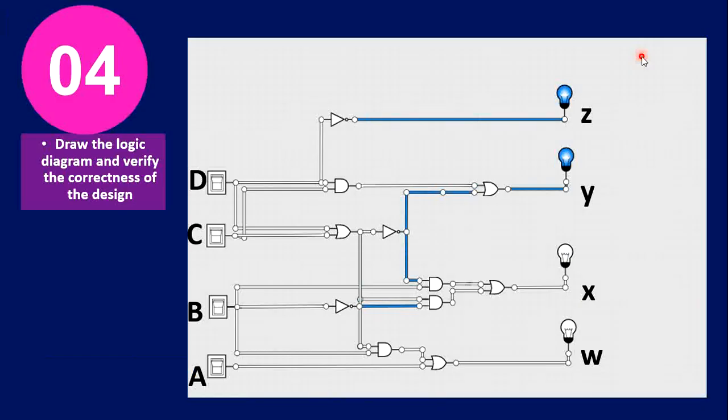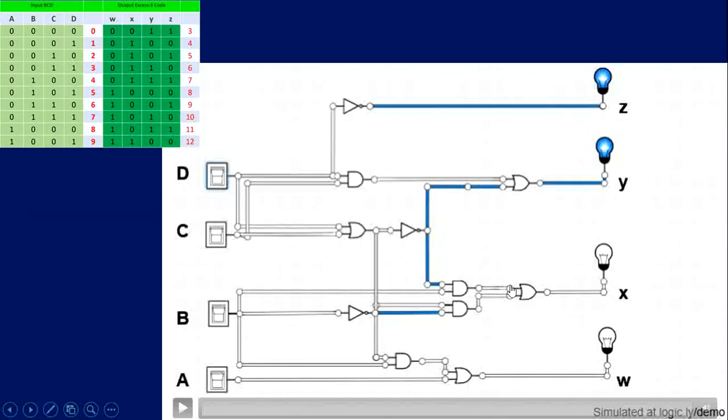Number four: draw the logic diagram. I used an online logic simulation—I used logic.ly/demo. This is just a demo. Let's try to simulate and verify the correctness of the design. Let's verify if this logic circuit produces the correct result by referring to the truth table for every input. As you can see, A, B, C, D are our inputs; W, X, Y, Z are outputs. A is the most significant bit for the input; D is the least significant bit. W is the most significant bit for the output; Z is the least significant bit.